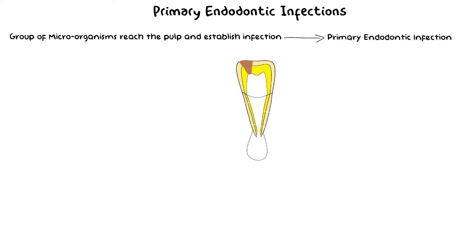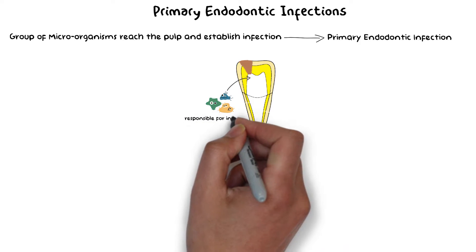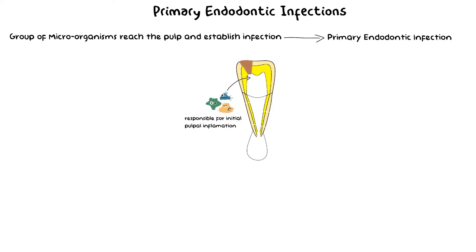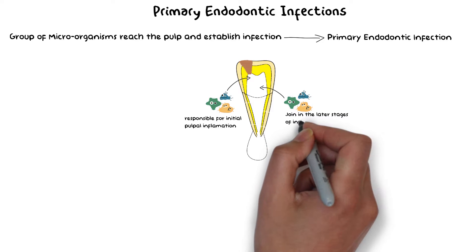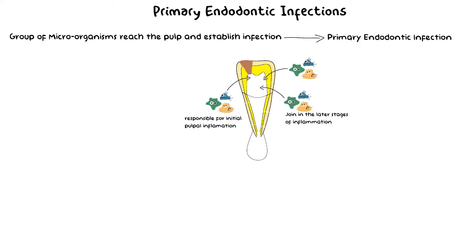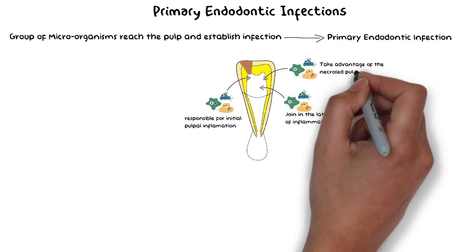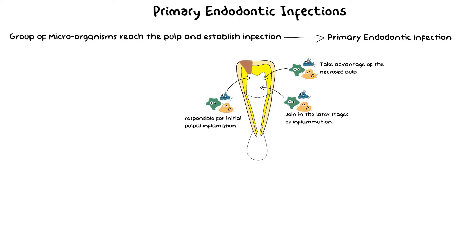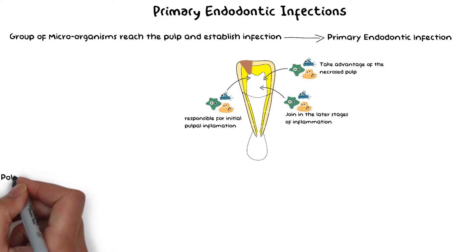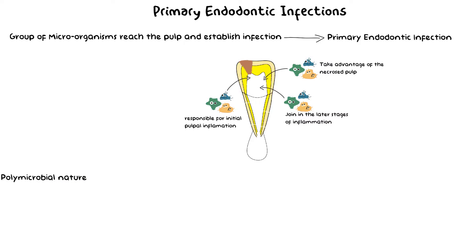There is usually a mixture of bacterial species present in primary infections, including those responsible for causing the initial pulp inflammation, those that may join in the later stages of inflammation, or bacteria that take advantage of an already necrosed pulp to attack and colonize it. Because the pulp has been exposed to the oral cavity, different bacteria can join later during the infectious process. Because of these different varieties of bacteria, a polymicrobial nature of microorganisms is found in the primary endodontic infection, and hence a diverse group of bacteria are present.